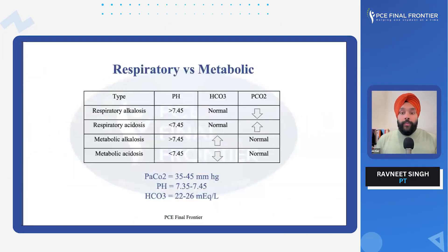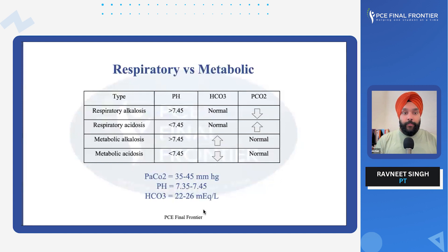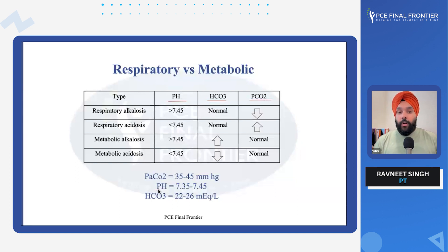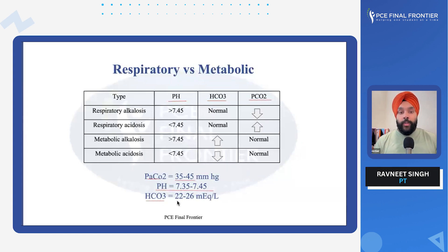Let's talk about how we differentiate respiratory and metabolic alkalosis and acidosis in arterial blood gas analysis. There are a few things we need: the levels of pH, bicarbonates, and carbon dioxide. The normal pH is 7.35 to 7.45, carbon dioxide 35 to 45, and bicarbonates 22 to 26.